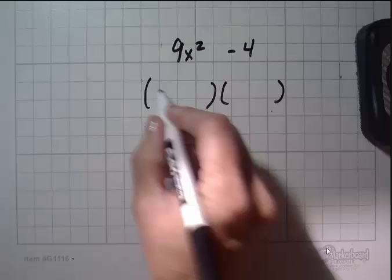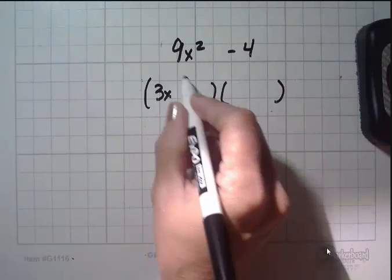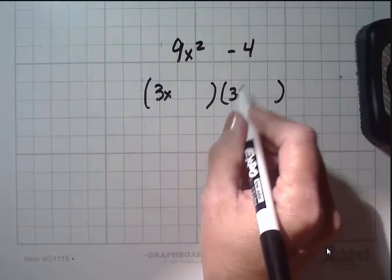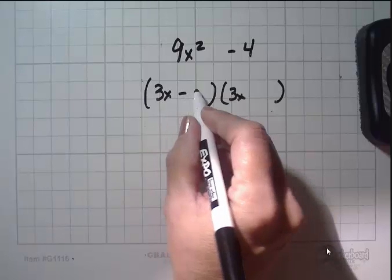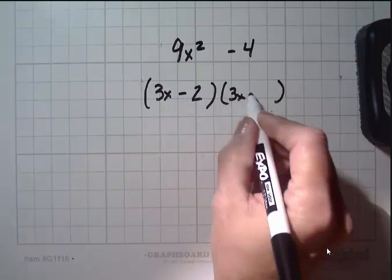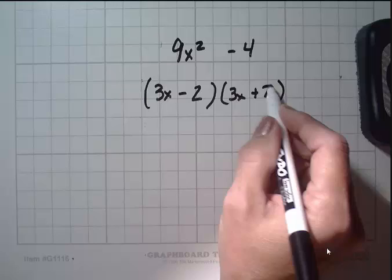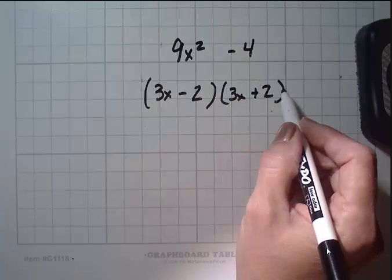So I can do my two sets of parentheses. 3x, right? 3x times 3x is going to give me 9x squared. And I have minus 2 plus 2. 2 comes from the fact that it's a square root of 4.